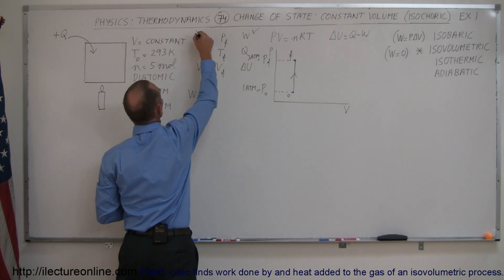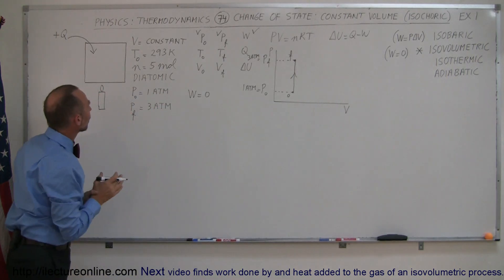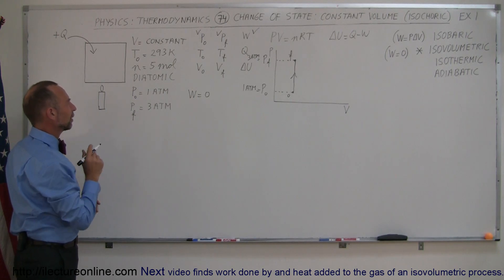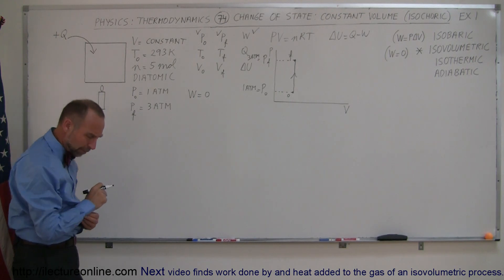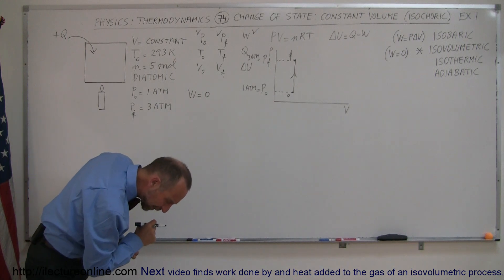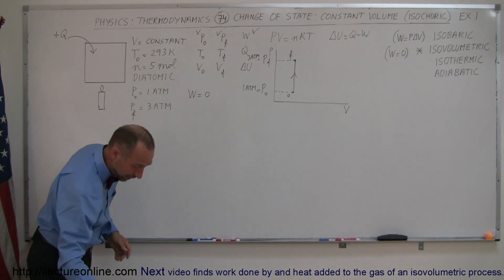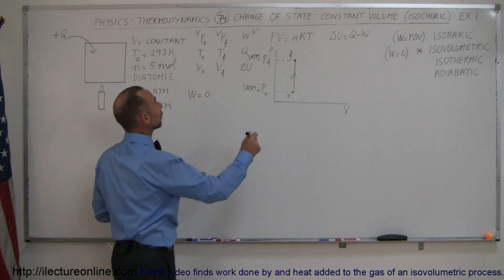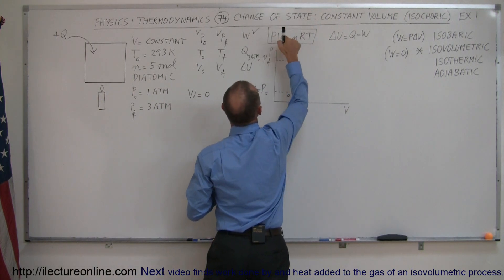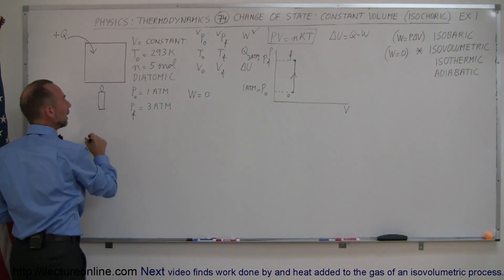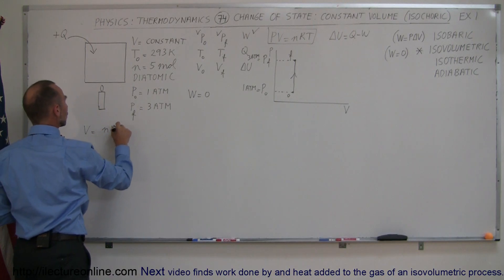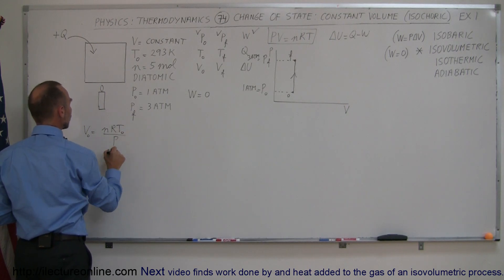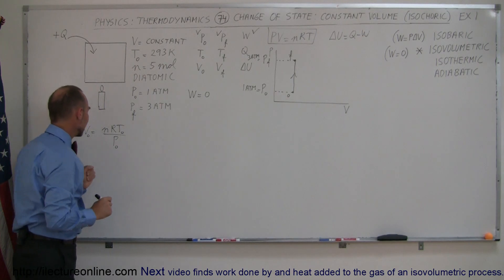We know the initial and final pressure, but we don't yet know the initial and final temperature. We do have the initial temperature given as 293 Kelvin, so the initial volume is something we need to solve for. We'll use PV = nRT, rearranged to V = nRT / P, using the initial temperature and initial pressure.